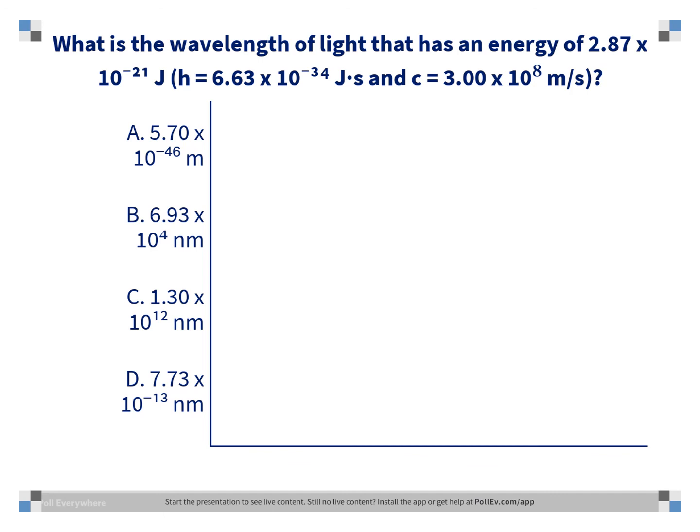Before we do, we rearrange it to solve for frequency. We divide both sides by h and get ν equals E over h. We plug in our values from the problem and get 4.3288 times 10 to the 12 per second.